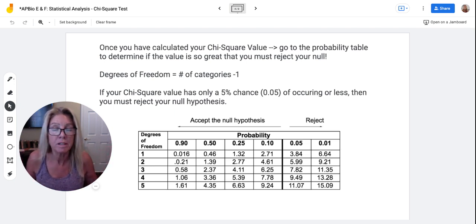So the probability will vary depending on what's called your degrees of freedom. Your degrees of freedom is however many categories of results you have minus 1.